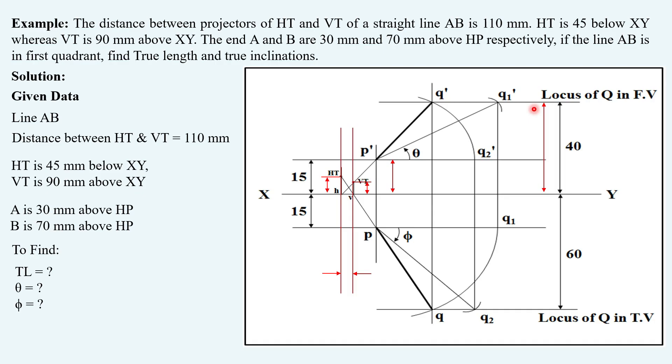Now looking at this solution you can conclude one statement which is going to be common for every question on projection of lines: front view H and VT are on the same line. Similarly, top view V and HT are always on the same line. This is going to remain common for each and every question on projection of lines.